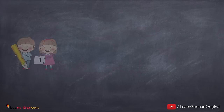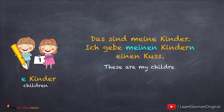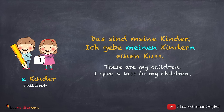Let's look at the plural case. Das sind meine Kinder. Ich gebe meinen Kindern einen Kuss. Since the article for 'Kinder' is 'die' and it's plural, the possessive pronoun would be 'meinen'. And remember, there's an extra 'n' added to the plural noun, which makes it 'Kindern'.